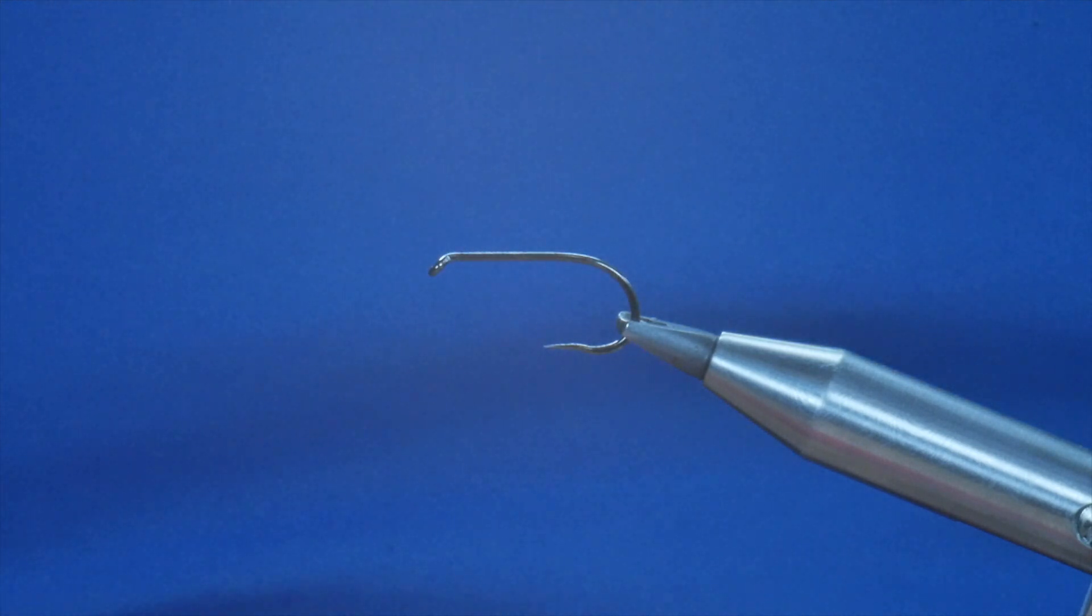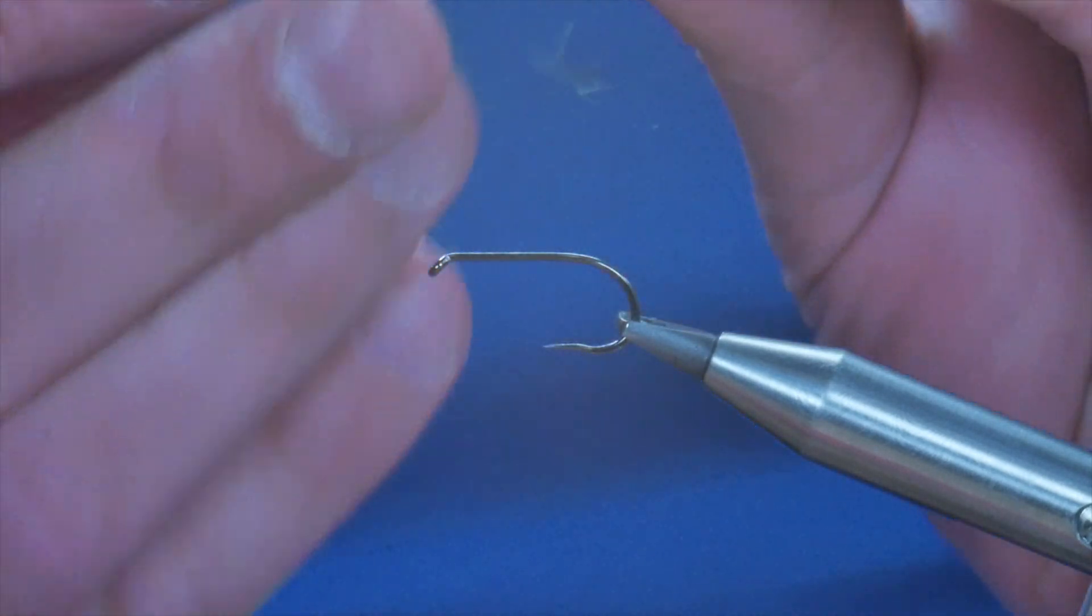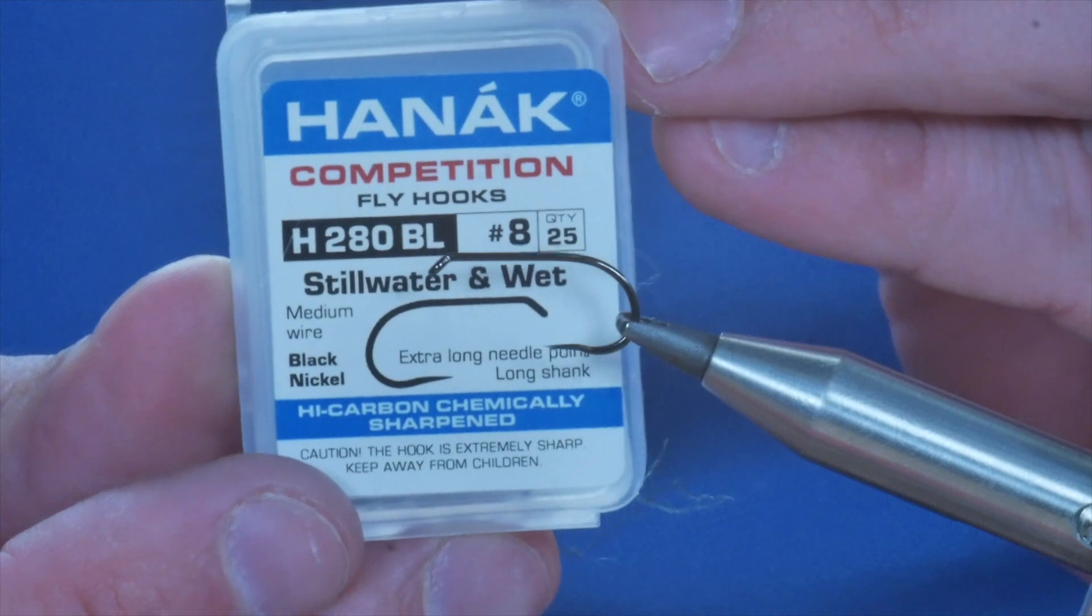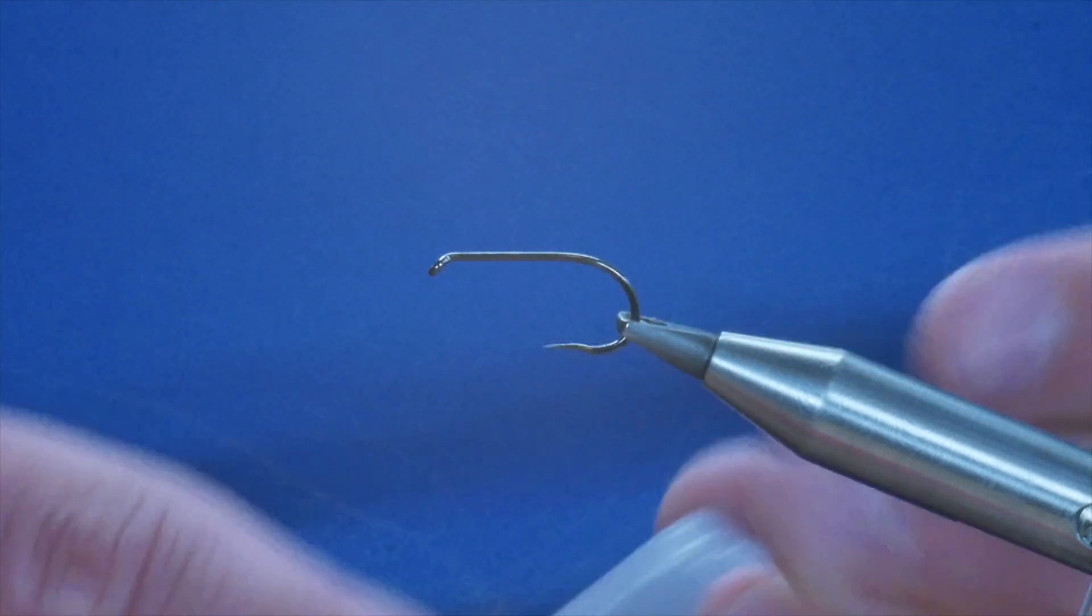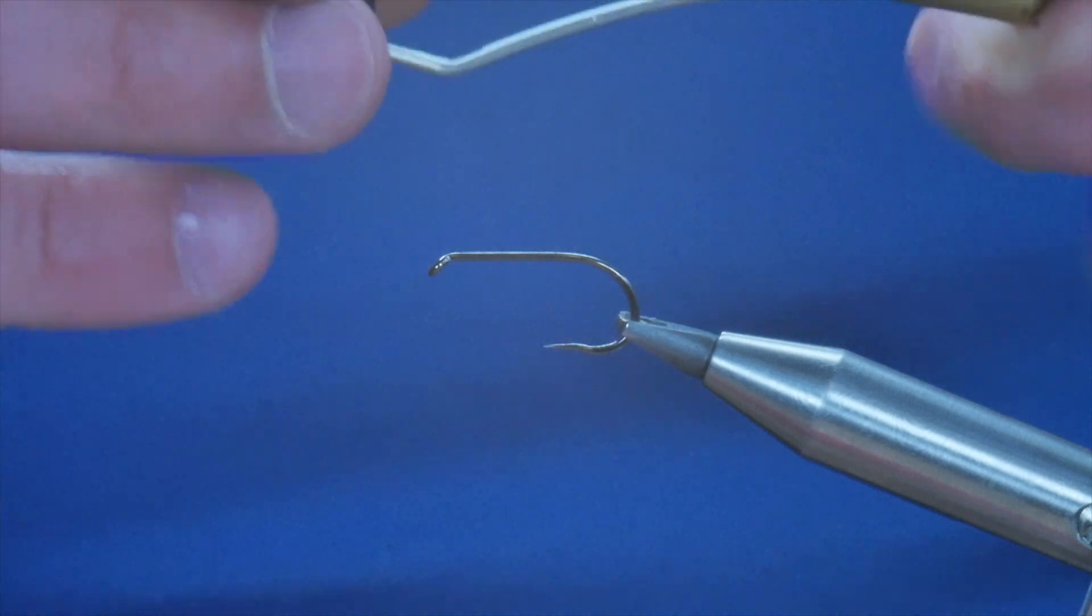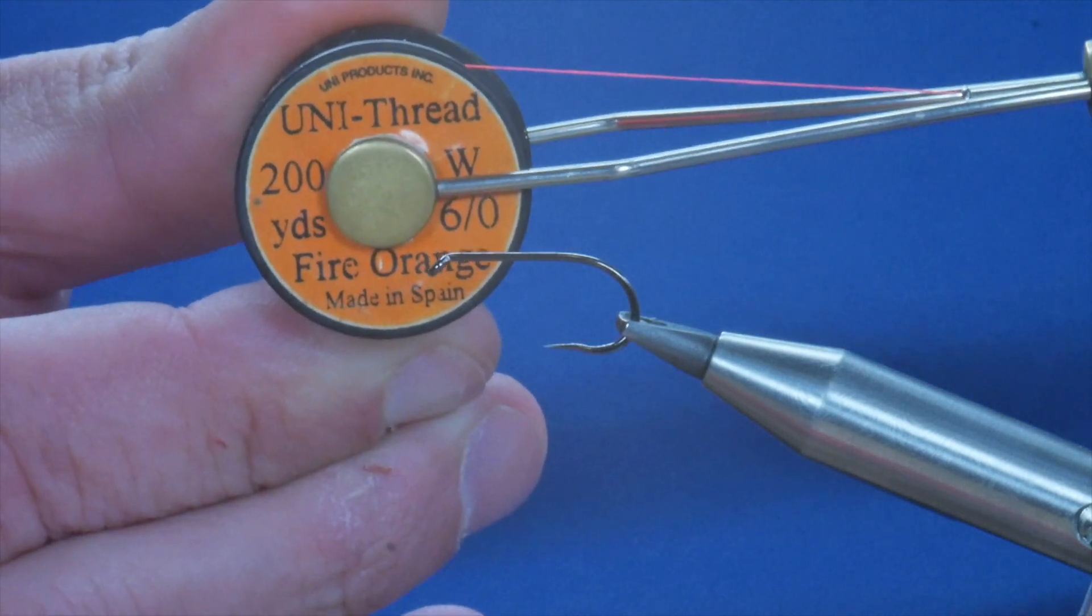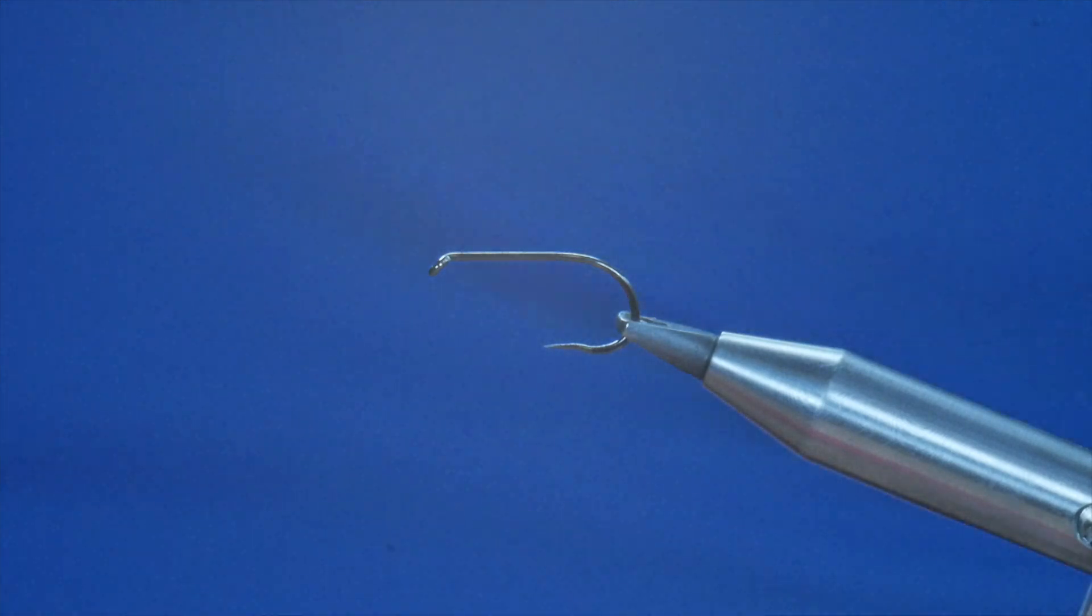In the vise I have a Hanak 280 barbless hook, it's size 8, it's a medium wired hook, so nice and light. The thread I'm going to be using today is the Uni thread in Fire Orange, it's a 6-0 thread and first thing I'm going to do is put a little bit of wax onto my thread.